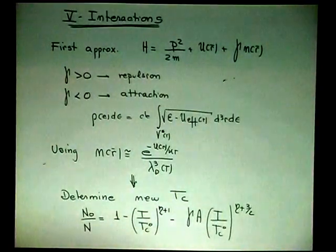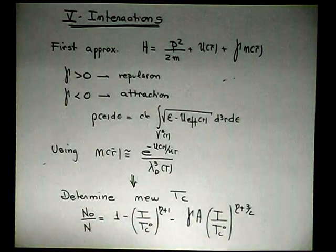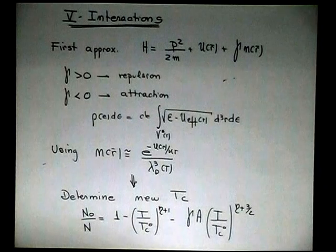So maybe this is the confusion. Tc zero is the critical temperature of the same system if you make gamma equal to zero, okay?